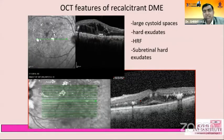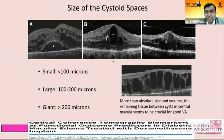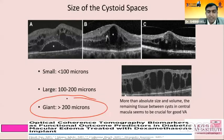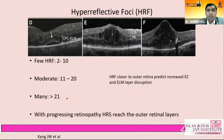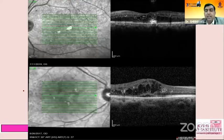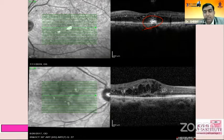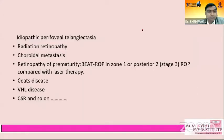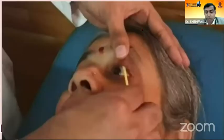In recalcitrant DME, there are large cystoid spaces — especially when taller than 200 microns or when there are more than 21 hyperreflective foci — with a slightly poor prognosis with anti-VEGFs. These do well with steroids. Sub-retinal cholesterol deposits are also cases that go well with OZURDEX. Other indications for intravitreal injection include radiation retinopathy, choroidal metastases, ROP, Coats disease, VHL, and CSR.